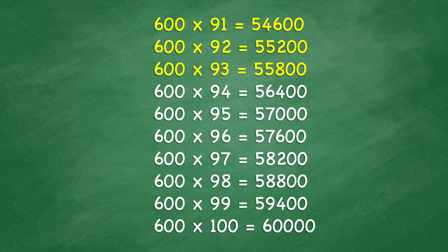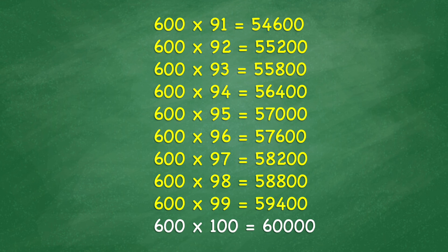600 times 94 equals 56,400. 600 times 95 equals 57,000. 600 times 97 equals 58,200. 600 times 98 equals 58,800. 600 times 99 equals 59,400. 600 times 100 equals 60,000.